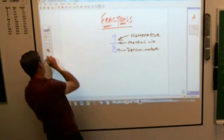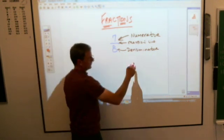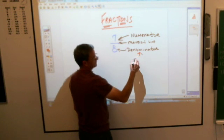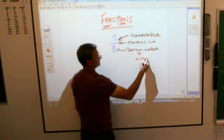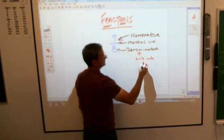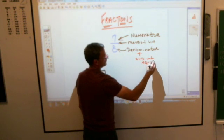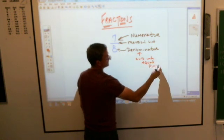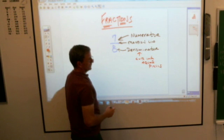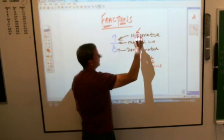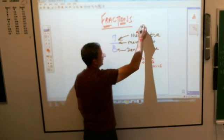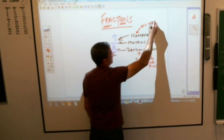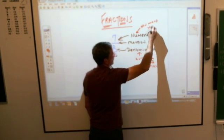And one thing to remember is the denominator cuts into equal pieces, and the top number is kind of how many of those pieces you have.